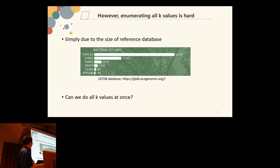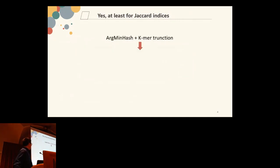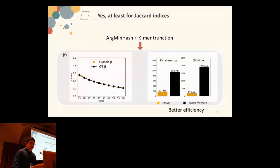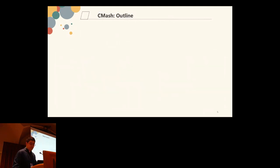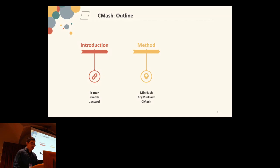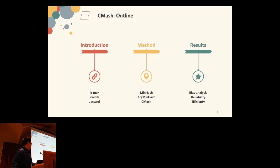So we may wonder: can we do all k-values at once? Yes, at least for the Jaccard indices. In this presentation, I will show how we utilize the idea of argmin hash as well as k-mer truncation to get multi-resolution estimation for k-mer-based similarities with better efficiency and negligible bias in practice. Here is a brief outline for SMASH: basic definitions, how SMASH works based on argmin hash and k-mer truncation, and how SMASH performs on real data.